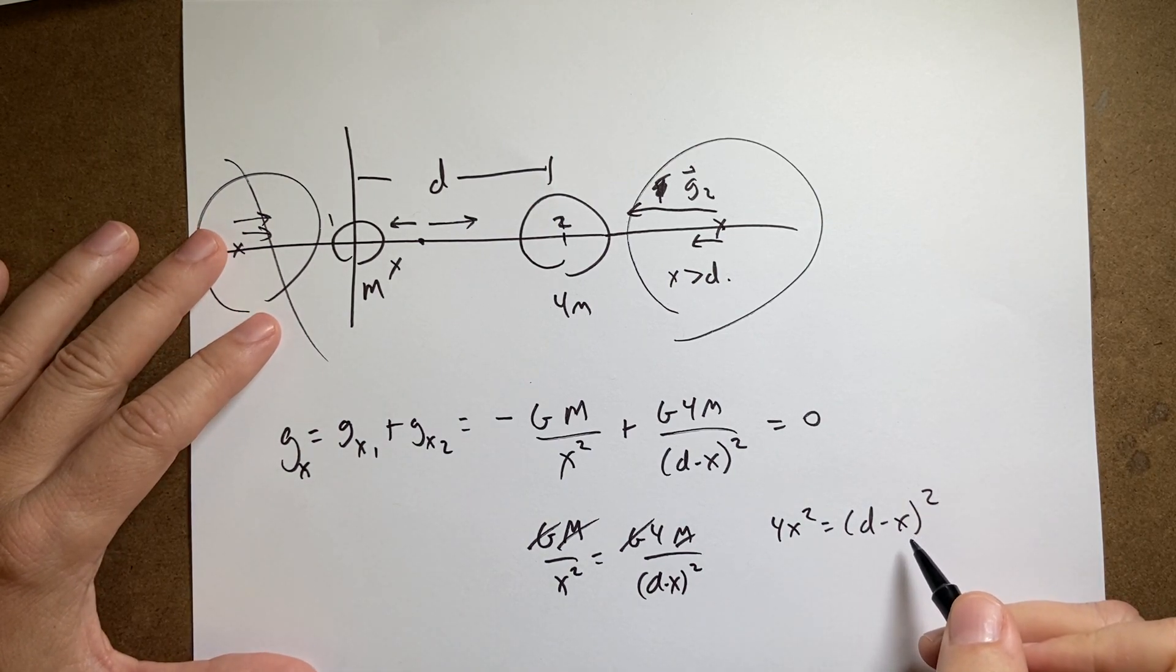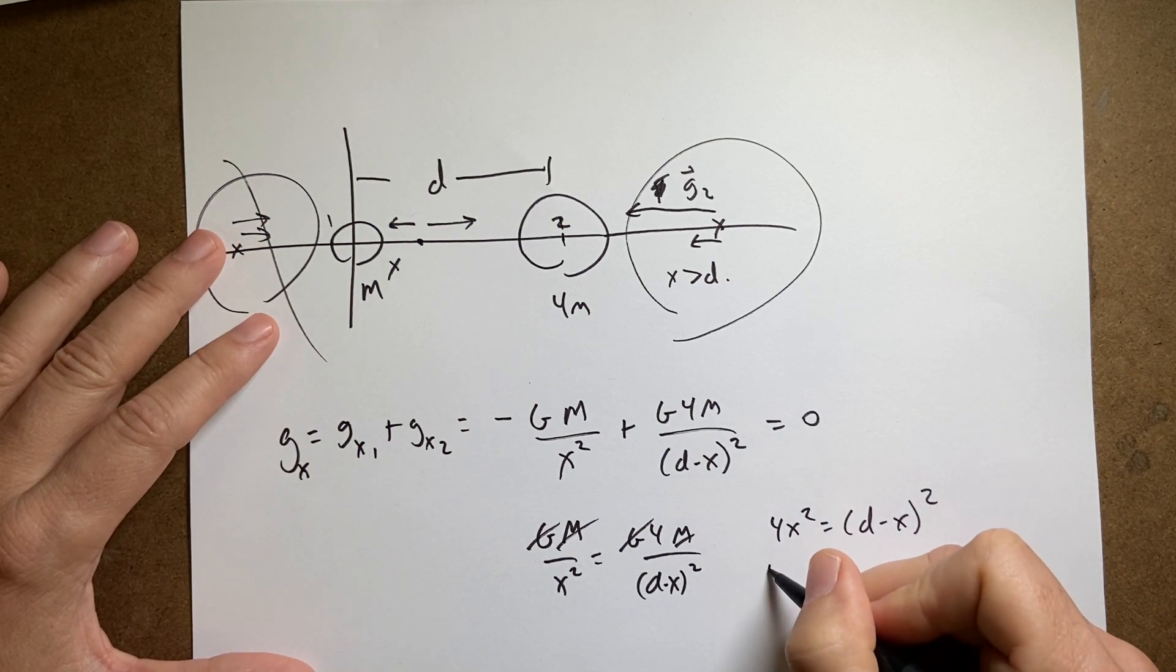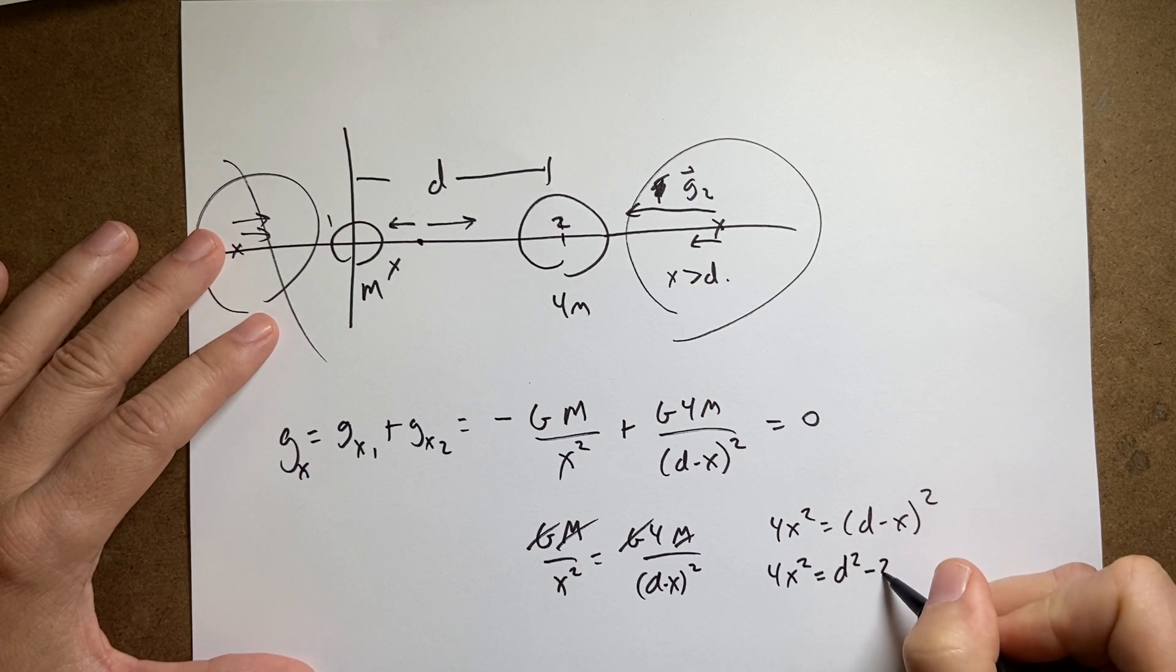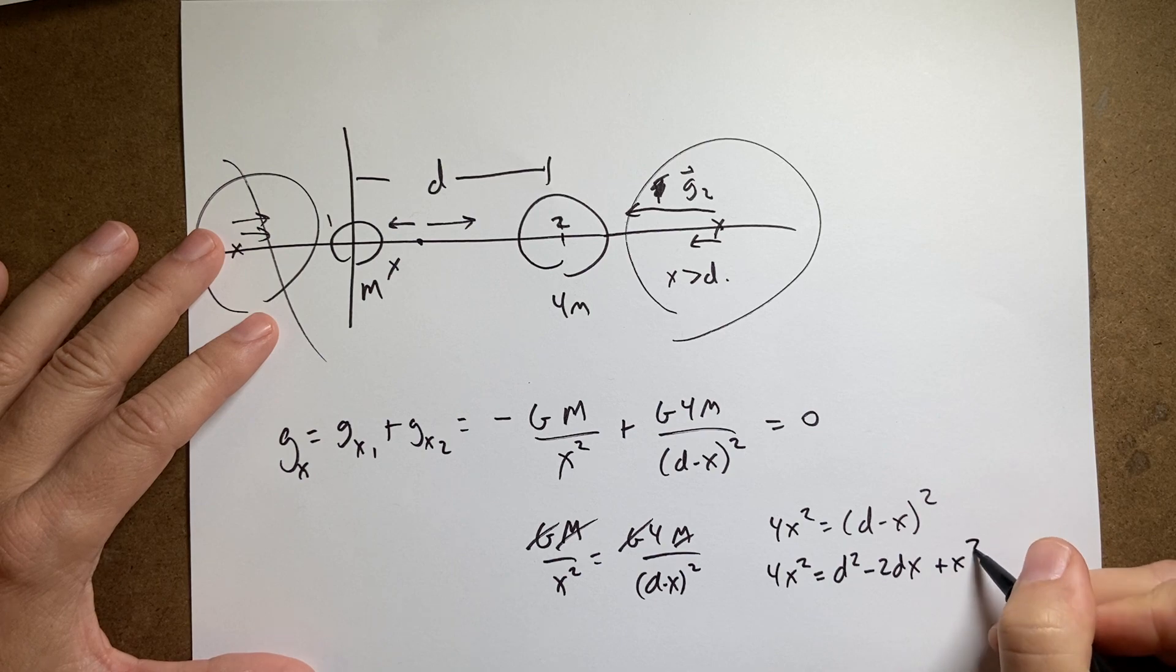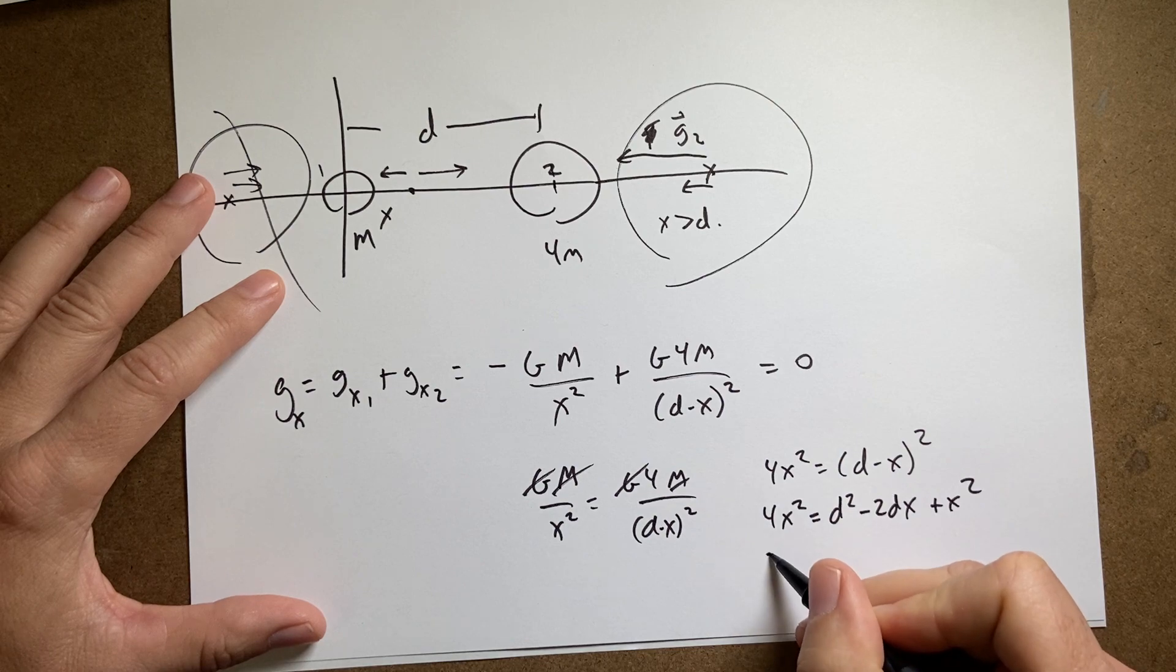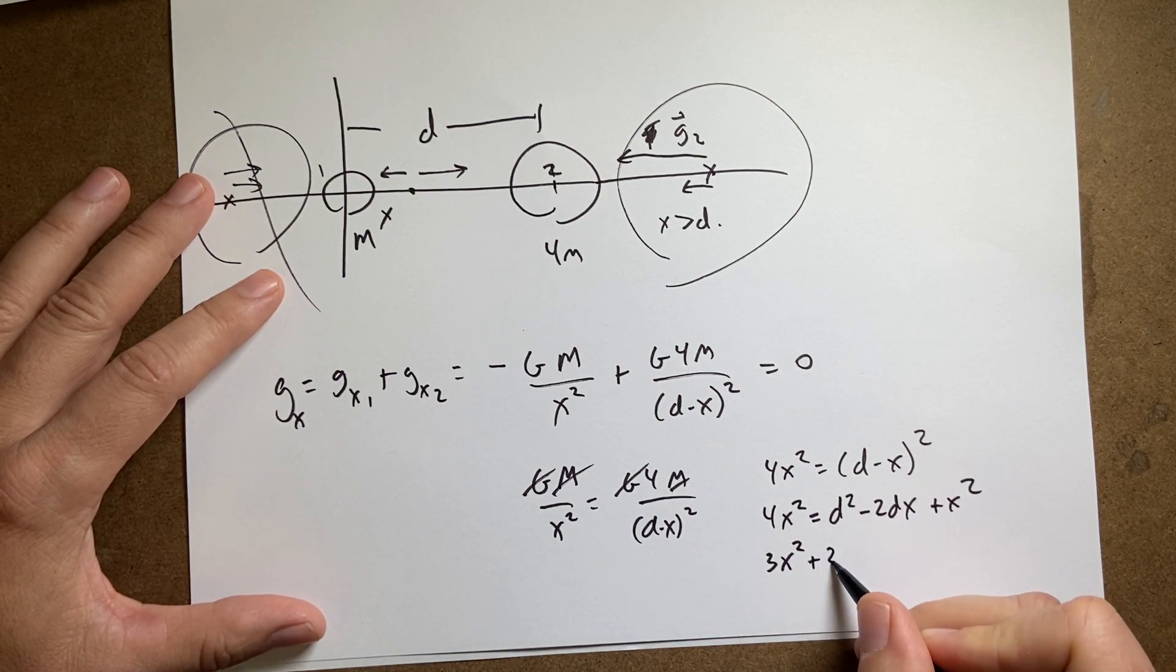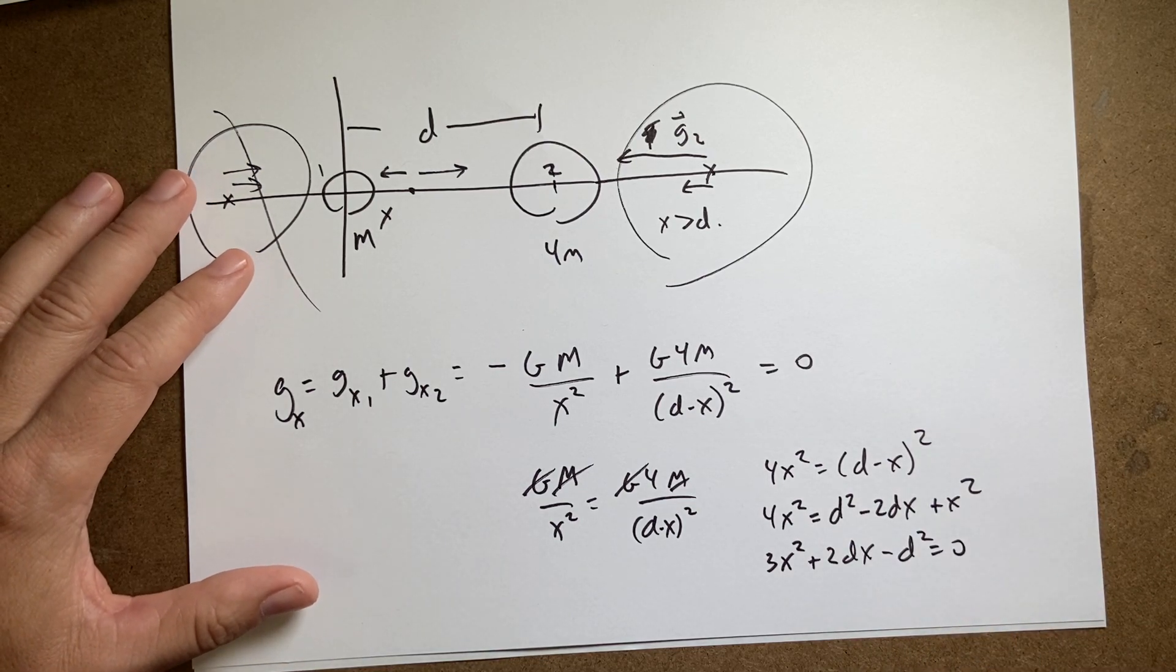And now I want to solve for x. So the first thing I'm going to do is multiply this out. So I get 4x squared equals d squared minus 2dx plus x squared. So now I have a quadratic equation.